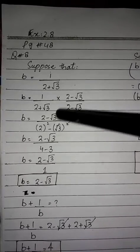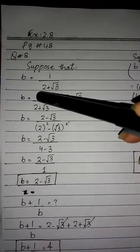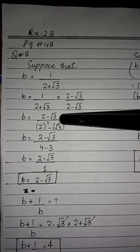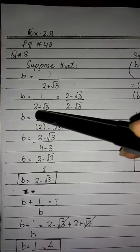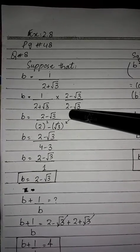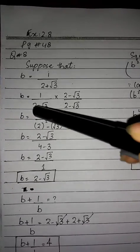The answer is 2 minus root 3. Here we have (a plus b)(a minus b), which is equal to a squared minus b squared.